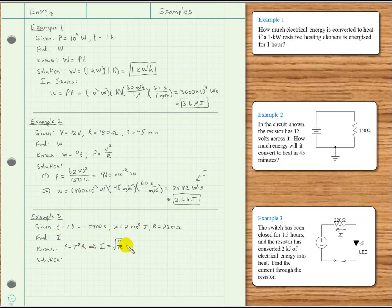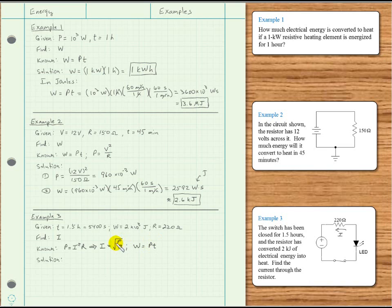We know energy equals power times time, where time is in seconds, power is in watts, and energy is in joules. Solving for power: P equals energy divided by time, in joules divided by seconds, giving watts. We can substitute that into I equals the square root of P over R to solve for current. This will be a two-step process: first find power, then find current.